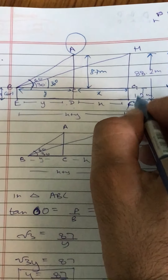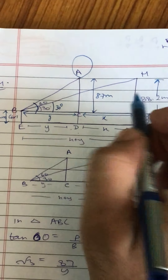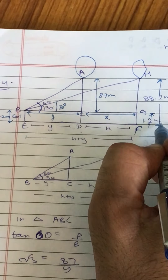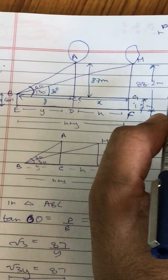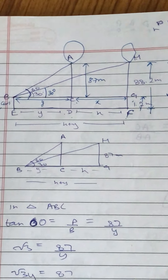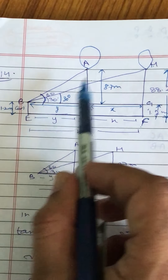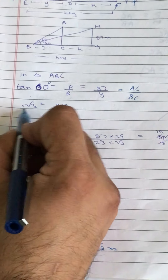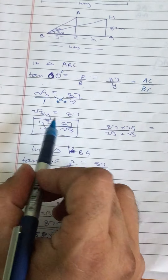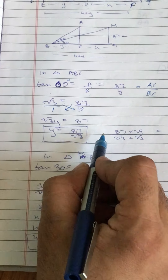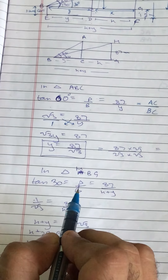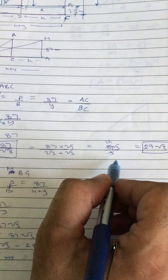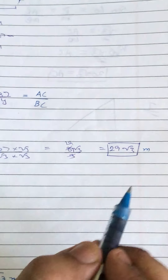Dhyan rakhne ki baat yeh hai ki BE aur GF barabar hain, dono 1.2. Aur yeh poori height balloon ki earth surface se — HF — yeh poori 88.2 di hai. Do triangle saaf saaf dikh rahe hain. Triangle ABC mein lagaiye: tan60° equal to P upon B, yani AC upon BC. tan60° = root 3, AC ki jagah 87 (88.2 minus 1.2), aur BC ki jagah Y. Root 3 is equal to 87 upon Y. Cross multiply: root 3 Y is equal to 87. Y = 87 by root 3 — rationalize karke — Y = 87 root 3 by 3 = 29 root 3 meter.